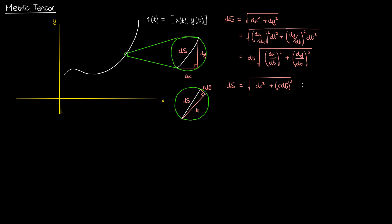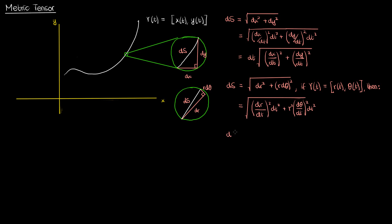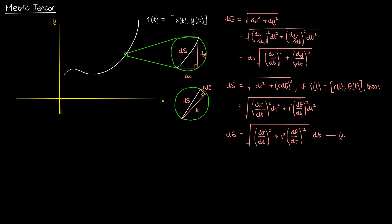Again, if we assume the polar curve is expressed in terms of parametric equations for r and theta with respect to the parameter t, we can write the differentials dr and dtheta in terms of t. We can then take the dt outside the square root to finally obtain the equation for the arc length element in polar coordinates.